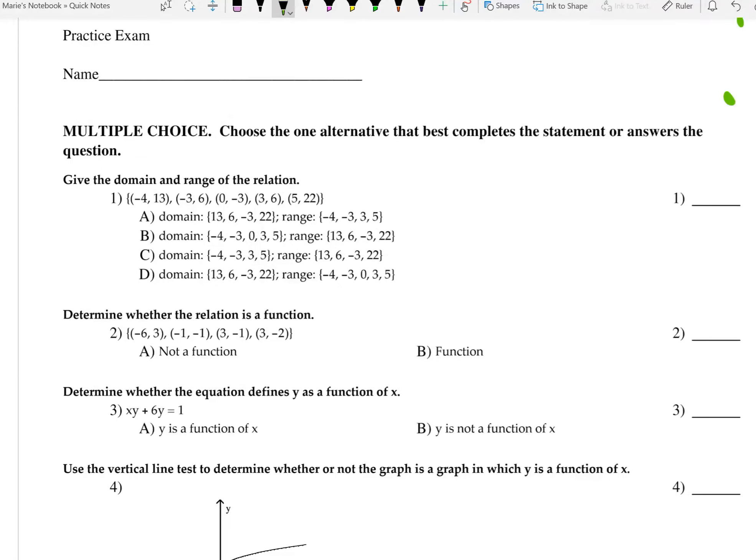All right, so this is a review for the test this Friday, and we start with question 1. So in question 1 it says, given the domain and range of the relation, and they're giving you this.